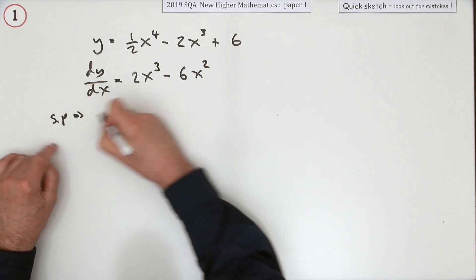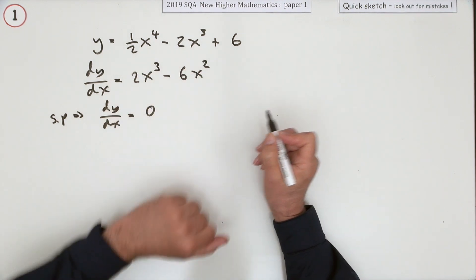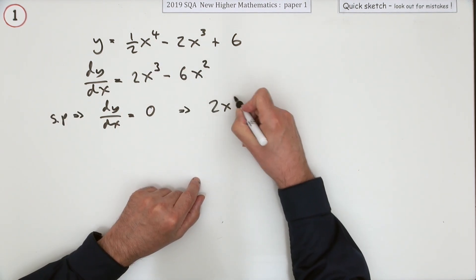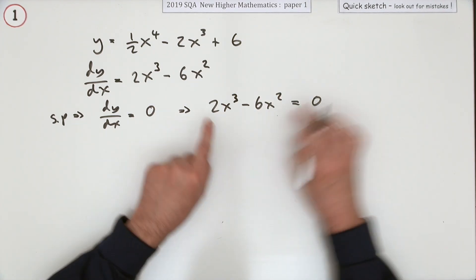I'll just put SP. A stationary point means that the derivative should come to zero - the gradient is zero there. So this should come to zero: 2x³ - 6x² should come to zero. Now solve that.